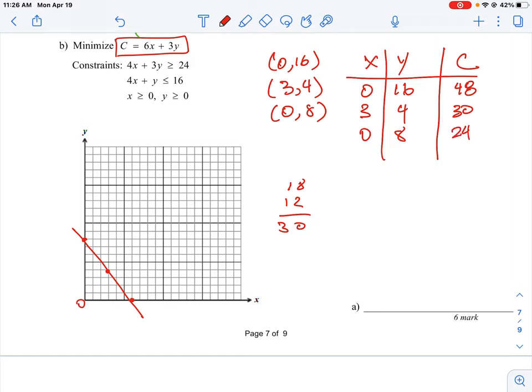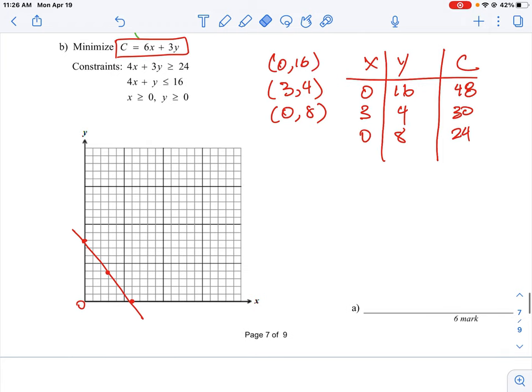Which point is going to minimize our cost for that function? We have a minimum of 24 at coordinates (0, 8). That is the combination that would minimize that function.